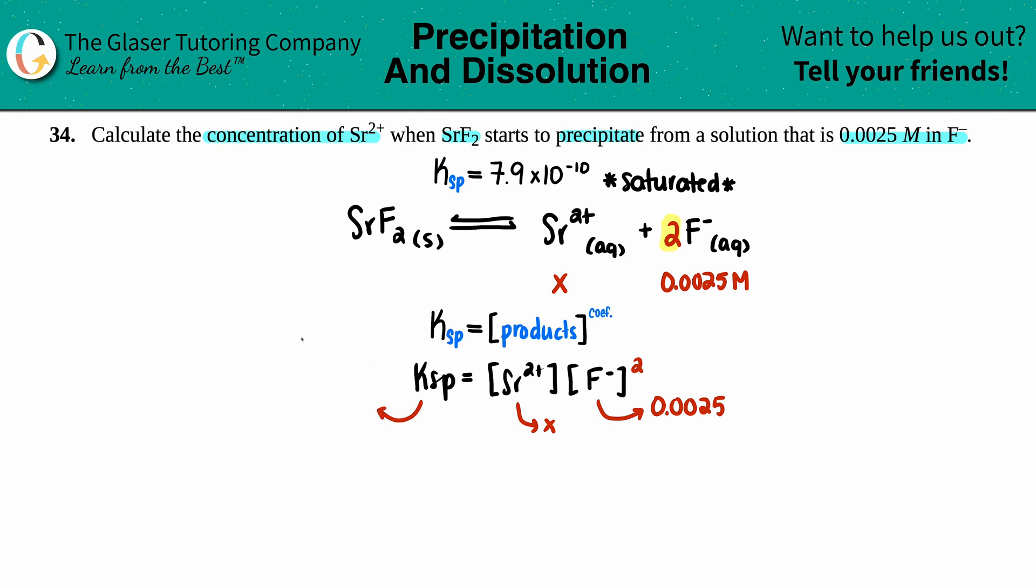Okay, let's go for it. 7.9 times 10 to the negative 10th equals x times 0.0025 squared. So let's do the squaring first. 0.0025 raised to the second—that's 6.25 times 10 to the negative 6th. So I'll just write that out here: x times 6.25 times 10 to the negative 6th.